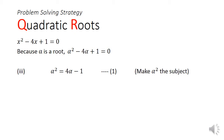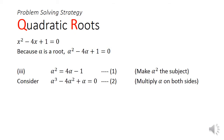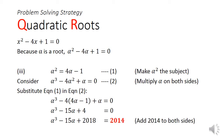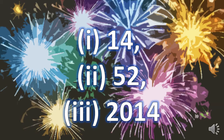For part 3, we first make alpha squared the subject: alpha squared equals to 4 alpha minus 1. We then multiply alpha throughout the original quadratic equation. That gives us alpha cubed minus 4 alpha squared plus alpha equals 0. After substituting equation 1 into equation 2, we can simplify and get alpha cubed minus 15 alpha plus 4. To get a constant term of 2018, we just add 2014 to both sides. That tells us alpha cubed minus 15 alpha plus 2018 equals 2014. So the answers are: part 1 is 14, part 2 is 52, and part 3 is 2014. Did you get it?